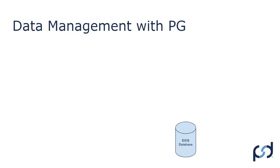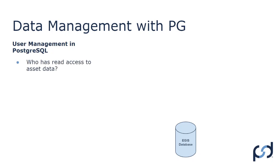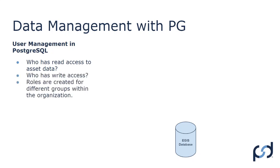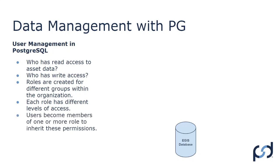What about permissions — who can access the database? User management is excellent within Postgres. We need to address who has read access to asset data and who has write access. The way we do this is by creating roles for different groups within the organization. This is usually the first phase of implementation — I'll talk with clients to find out what different groups exist and what levels of access they should have. Each role has a different level of access, and users become members of one of these roles and inherit those permissions.